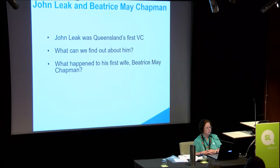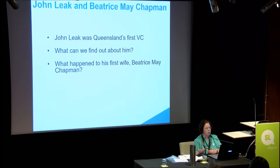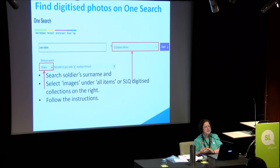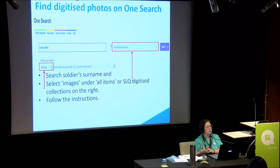The next one — John Leake was our first VC. The question is what can we find out about him? And what happened to his first wife? We're all aware that after war, a lot of those marriages that took place during the war tended to end, and this was a case where it did. Is everyone aware of the World War I portraits which have gone up on the web? The World War I ones were indexed in 1999 — we don't have them up on the web, just an index to them. But the World War I images are available.